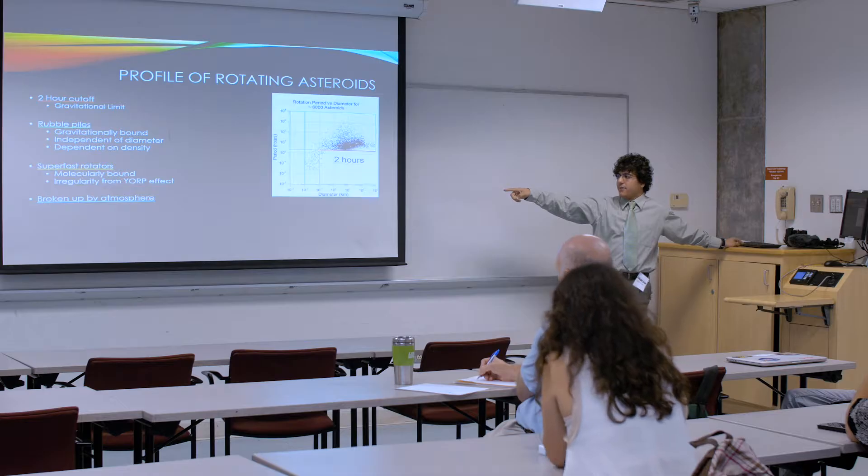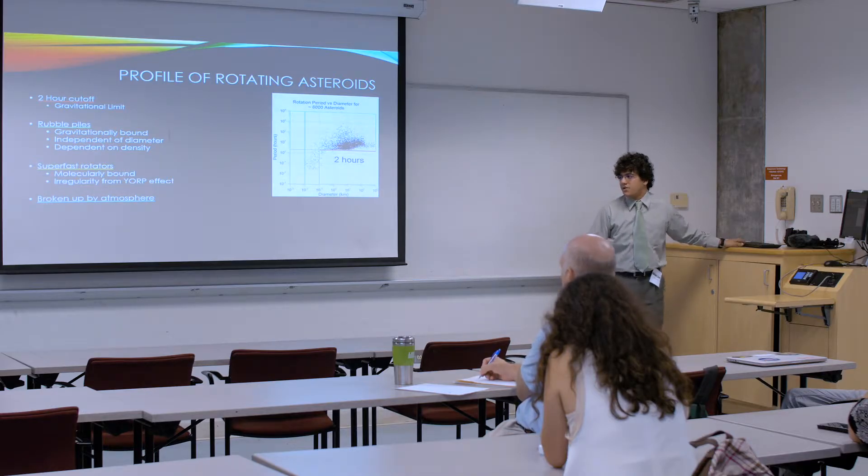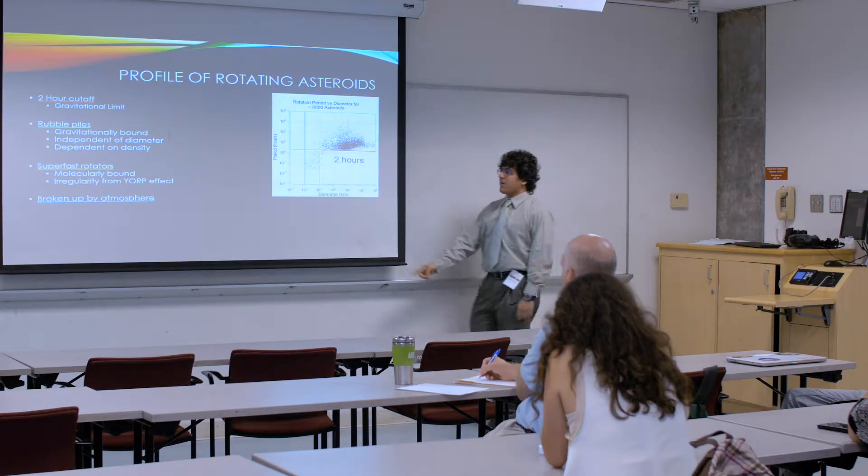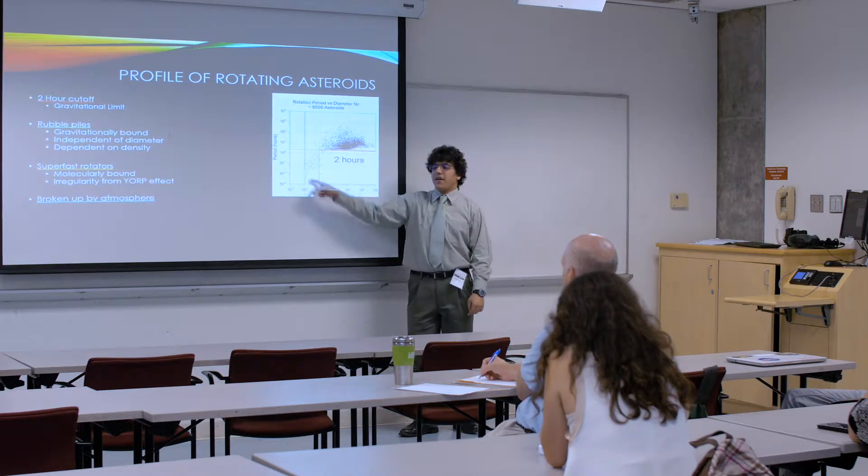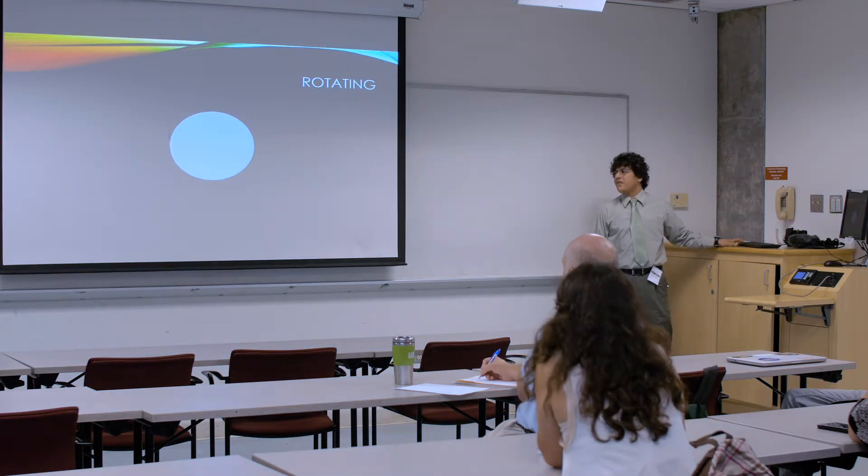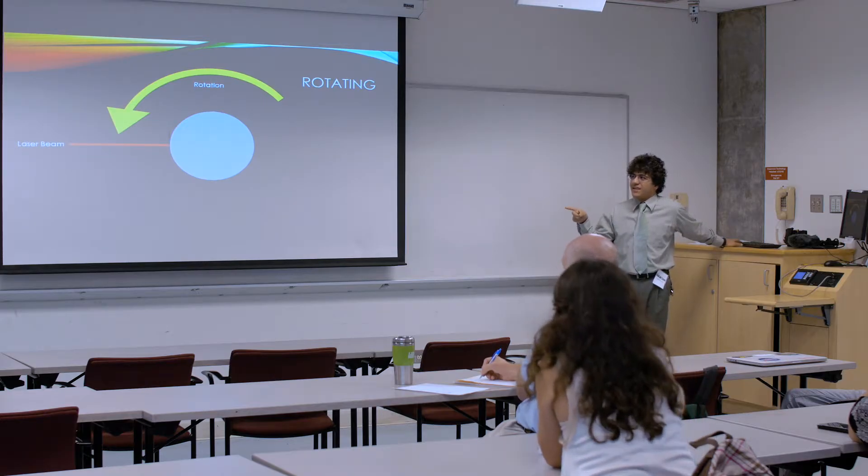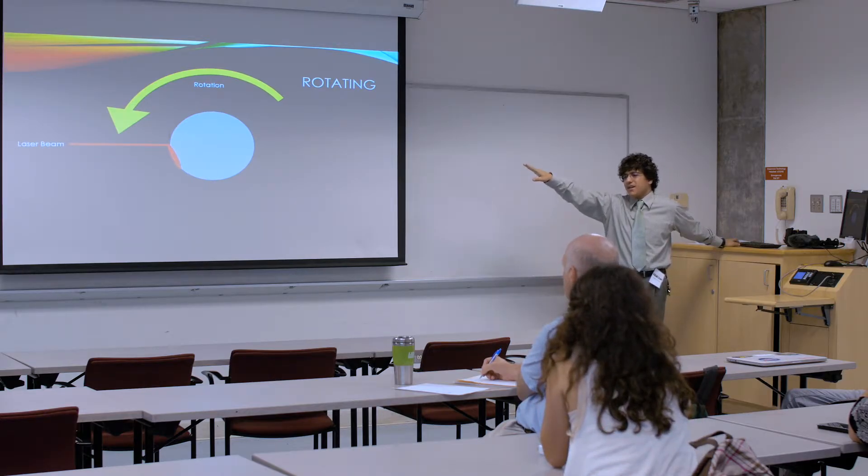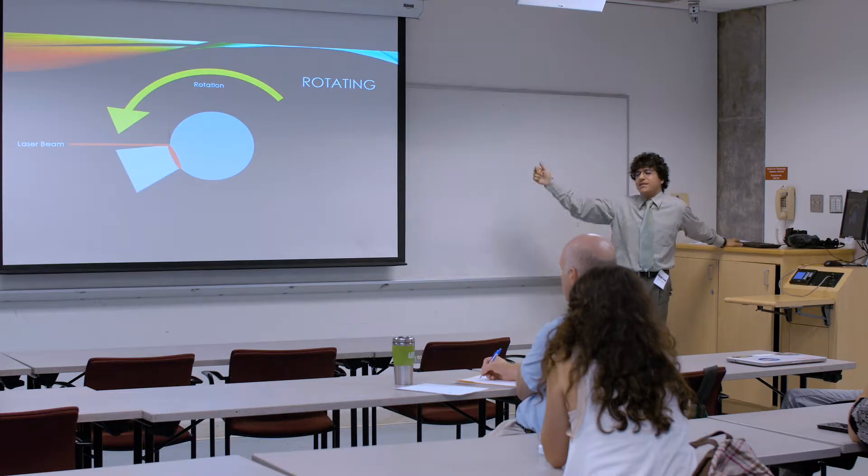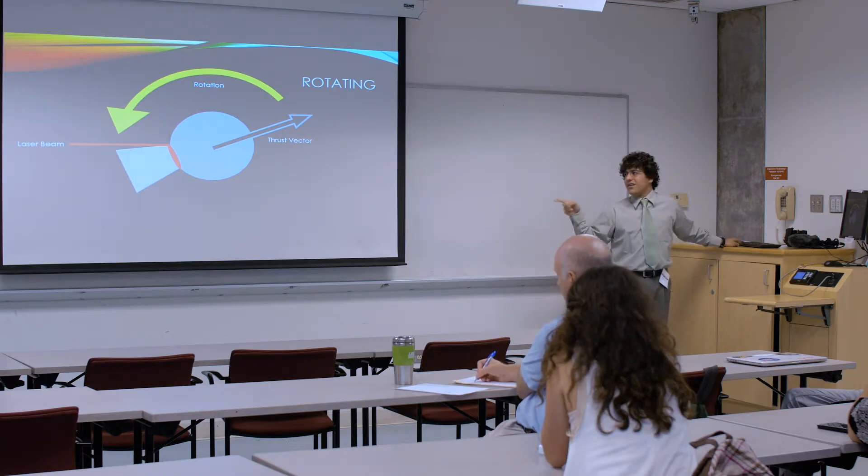This blue line here, everything to the left of that is going to be so small that it's just going to get broken up in Earth's atmosphere. So those aren't so worrisome. But what I'm interested in are these super fast rotators that are big enough to get by Earth's atmosphere. So what is the deal with rotating asteroids? You shoot a laser beam at an asteroid that's spinning. What you're going to get is a spot that smears across the surface. That means the ejection is no longer going to be in line with the laser beam, and you're going to get a thrust vector that is no longer aligned with your laser beam.